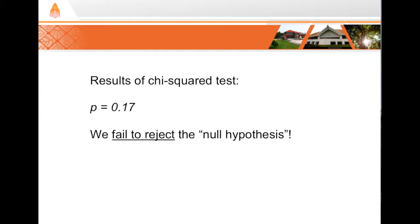Interpreting our results: a p-value of 0.17 means we would expect to see results as extreme as ours 17% of the time under the null hypothesis. Assuming a significance level of 5%, we fail to reject the null hypothesis. This doesn't confirm the null — perhaps our sample size was too small to detect an effect — but it is fairly likely we could have observed this distribution of safety among males and females if there truly was no difference.